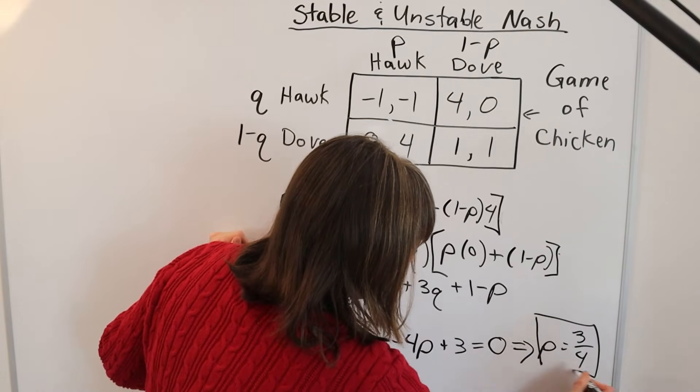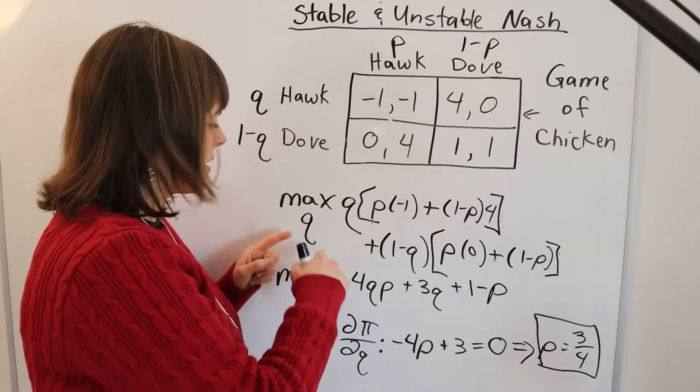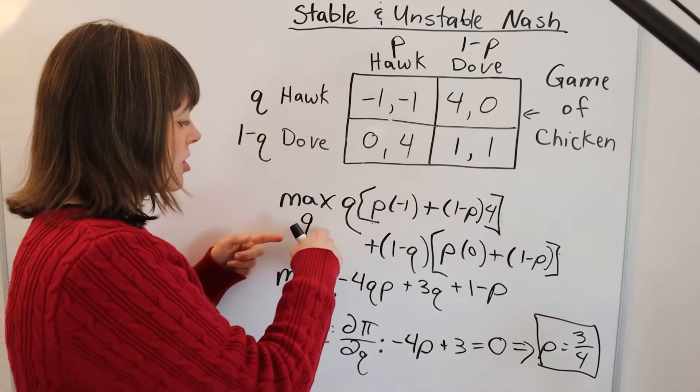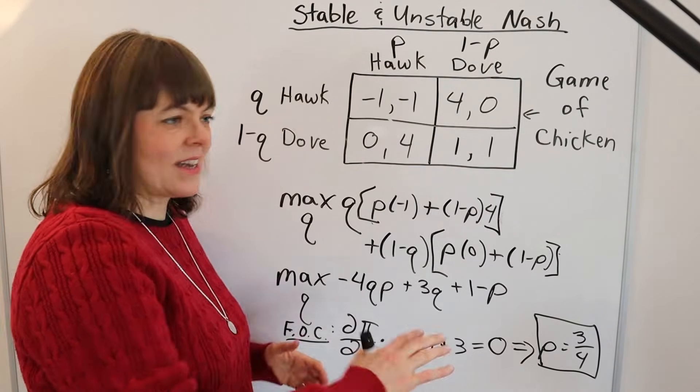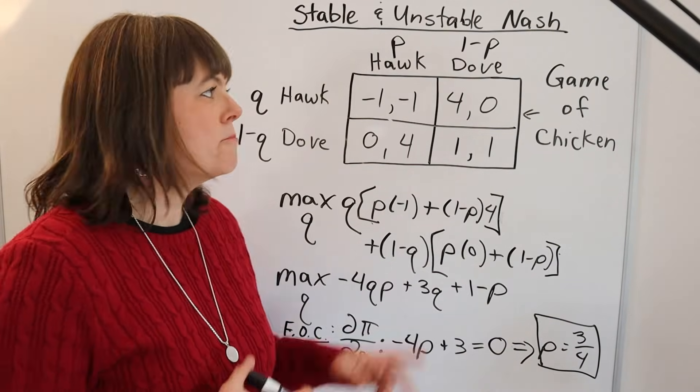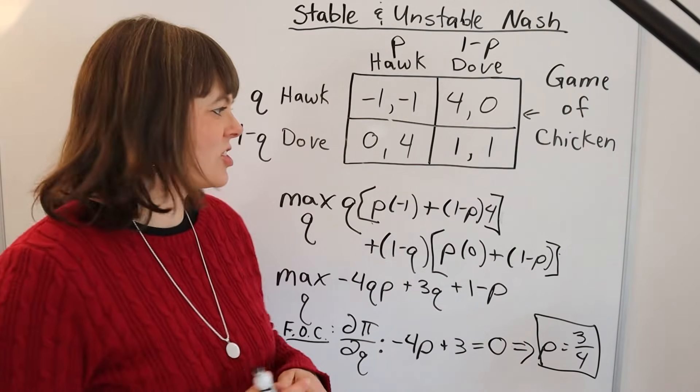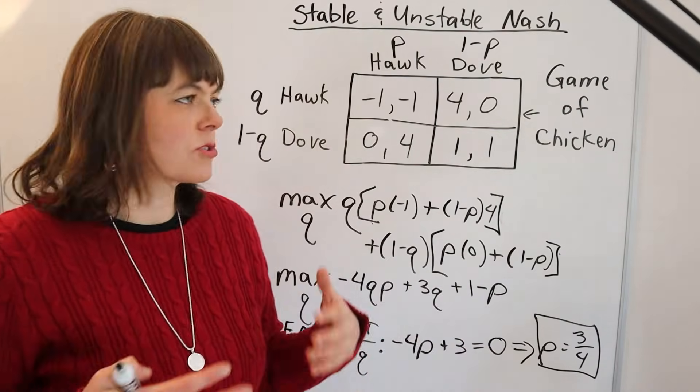Notice it's a little weird that we set up an optimization problem trying to decide what we as player one should choose for our mix—that's Q—and what popped out had nothing to do with Q. It had to do with P, the other player's mix. That's how mixed strategy Nash equilibrium works. You can use either method depending on what you're most comfortable with.